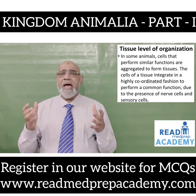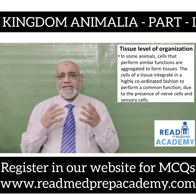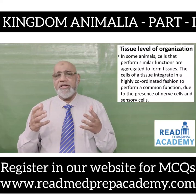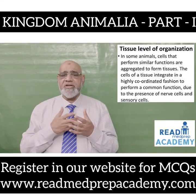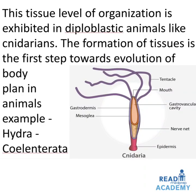Tissue level of organization: in some animals, cells that perform similar functions are aggregated to form tissues. The cells of a tissue integrate in a highly coordinated fashion to perform a common function due to the presence of nerve cells and sensory cells. This tissue level of organization is exhibited in diploblastic animals like the cnidarians. Example: hydra, which belongs to Cnidaria. In the image of cnidaria or hydra you can see the tentacles, the mouth leading into the gastrovascular cavity, the nerve net, the epidermis, the mesoglea between the epidermis and the gastrodermis.